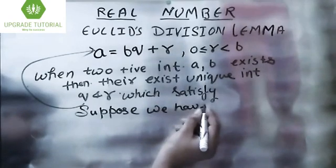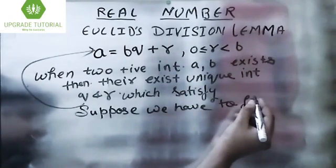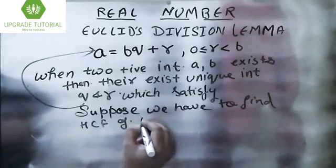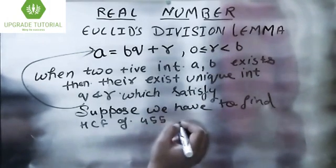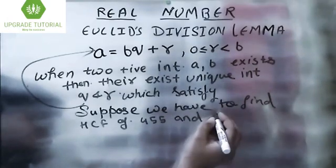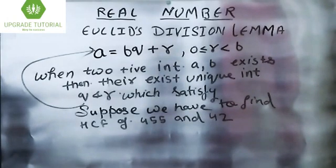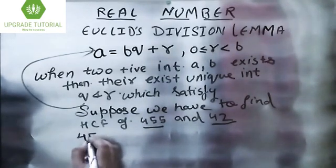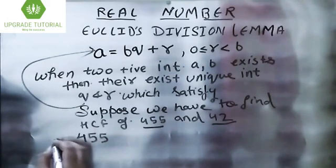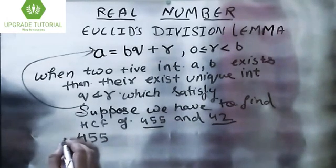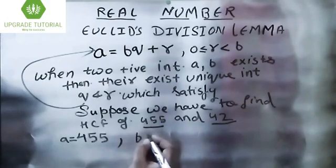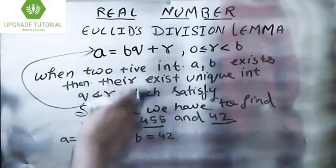Suppose we have to find the HCF of 455 and 42. What we have to do first is choose the largest among the numbers. Among these two, 455 is the largest, so we consider this as a. And b is equal to 42. Then we put this value and compare with this equation.